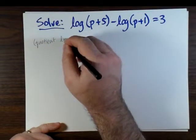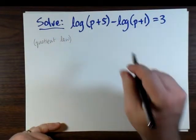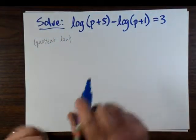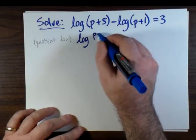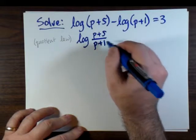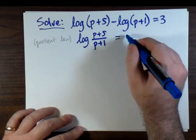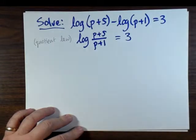Well, log of p plus 5 minus log of p plus 1 is a candidate for the quotient law because we have a difference of logs. So that means we can rewrite this as the log of p plus 5 over p plus 1. This is still equal to 3.